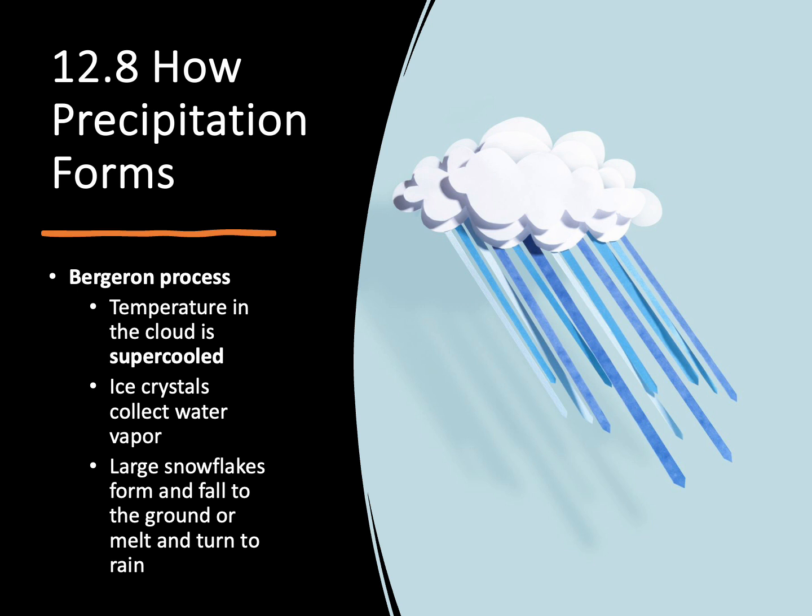One of the first things that we need to happen to form precipitation is that a cloud which is full of that condensed water vapor is going to need to be cooled, but it doesn't need to just be cooled, it needs to be supercooled.